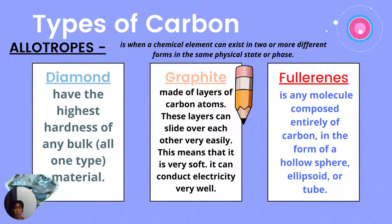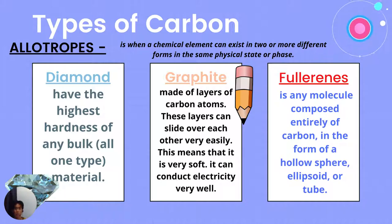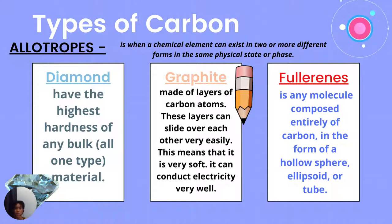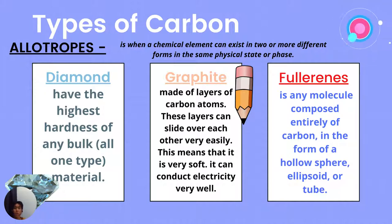So, what are the different types of allotropes? There are three. First is diamond, which has the highest hardness of any bulk material. Second is graphite, made of layers of carbon atoms. These layers can slide over each other very easily, meaning it is very soft, and it can conduct electricity very well. The third is fullerene, which is any molecule composed entirely of carbon in the form of a hollow sphere, ellipsoid, or tube.